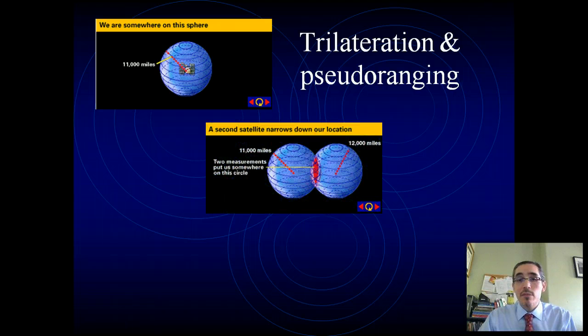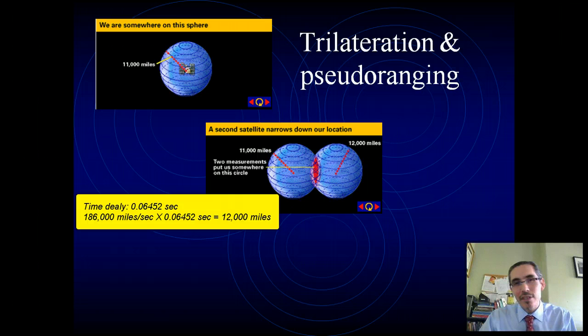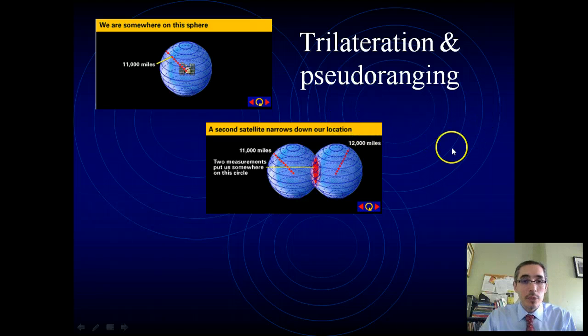Then you get a signal from a second satellite, and that signal takes about six and a half hundredths of a second to get to you, a slightly different time delay. But it's enough to calculate that you're now 12,000 miles from the known position of this other satellite. Again, it's a sphere around that known satellite. But if those two spheres overlap, then that starts to reduce the possibilities of where we are. We're somewhere in here, in that overlap.